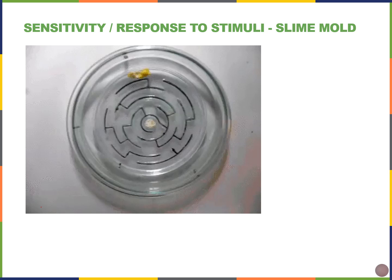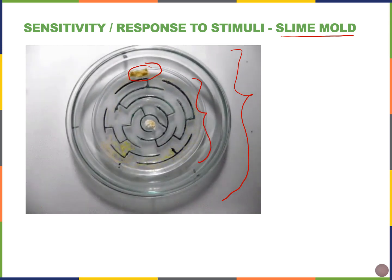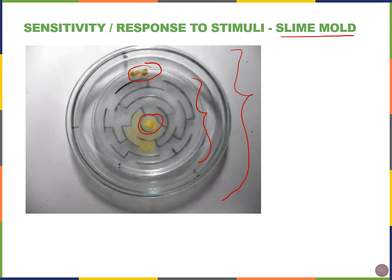Here's a neat example of a response to a stimulus. We have a slime mold — a type of protist — placed in a petri dish where researchers designed a maze and put some food in the middle. Somehow the slime mold can sense that the food is there, solve the maze, and reach the middle where the food is.